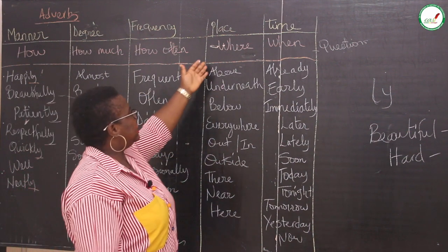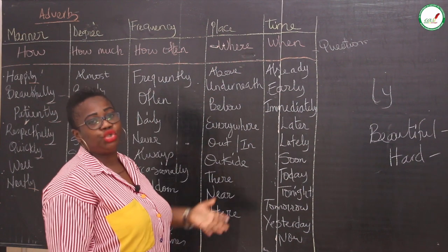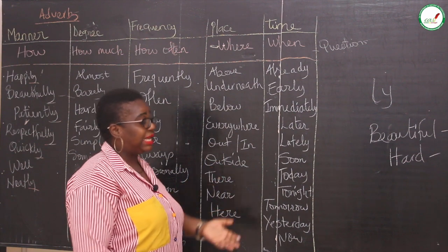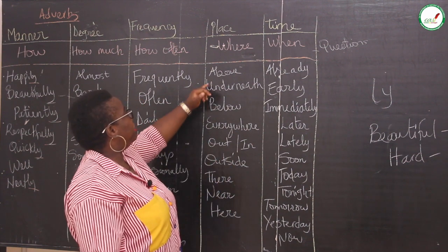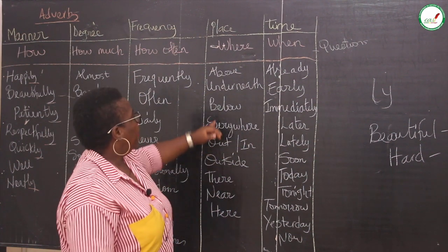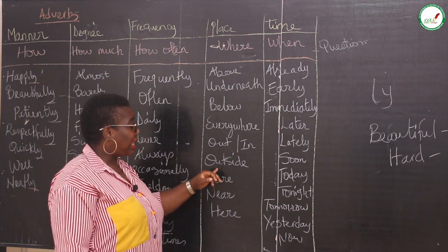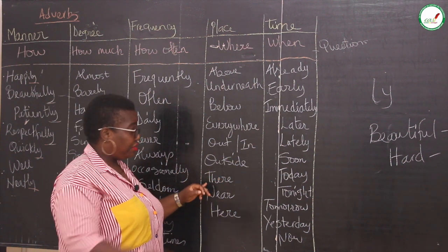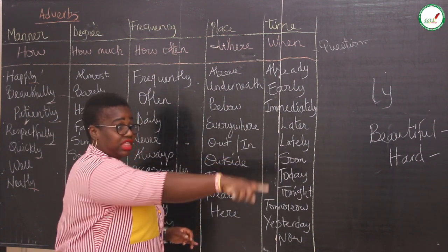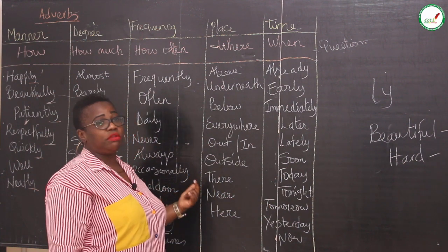And then we go to place. Place answers the question of where. Where did you put it? Where did you go to? It talks about the place — a particular place. And it can be above, underneath, below. Underneath is under. Below. Everywhere. Out, in. Outside, inside. There, near, here.